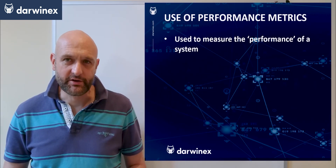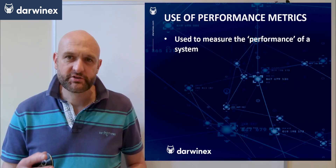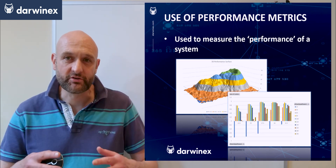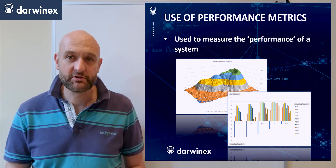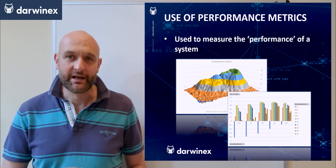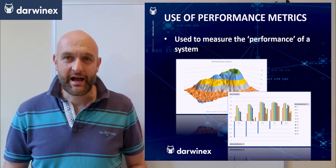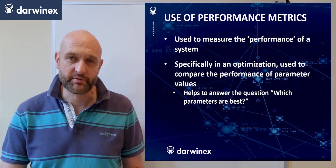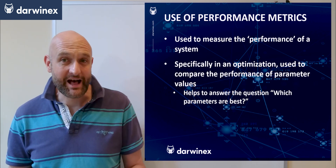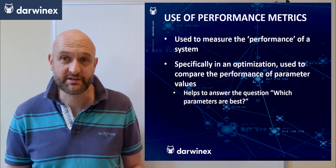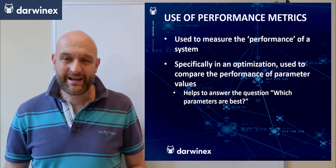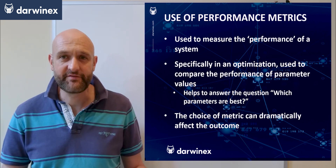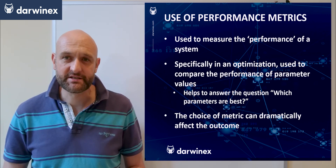Performance metrics are used in order to attribute a score to each of the parameter values. And by putting those performance metrics together, we can construct either a surface or a bar chart profile like the ones that we saw last week and the ones that I'm showing here on the screen. Specifically they're used to compare the performance of one set of parameters against another set, and therefore it helps us to answer the question of which parameters are best and which should be traded. The choice of performance metric you use can dramatically affect the decision that you make around this selection process.